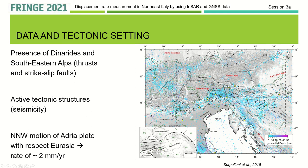Northeast Italy is an area characterized by an active convergent regime. Adria is moving in a north-northwest direction towards Eurasia at a rate of convergence of about two millimeters per year. The deformation is accommodated by the southeastern Alps and Dinarides, mainly characterized by the presence of thrusts and strike-slip faults.